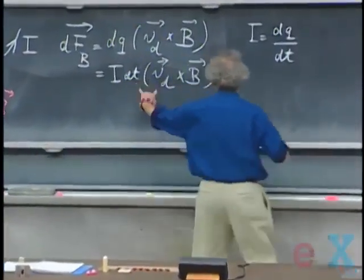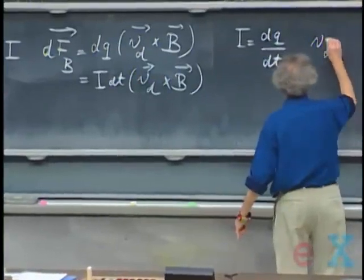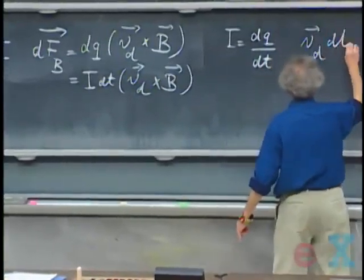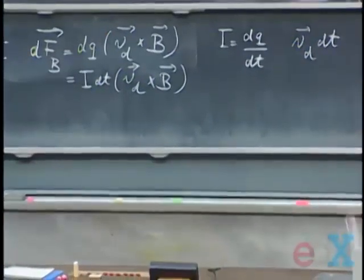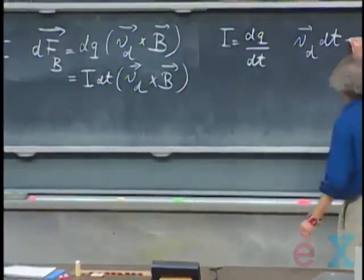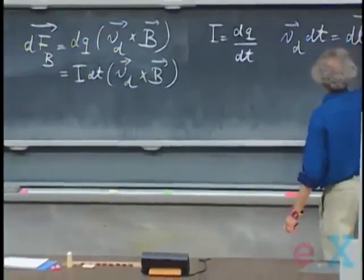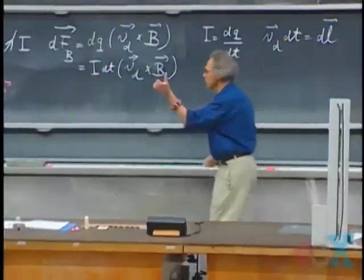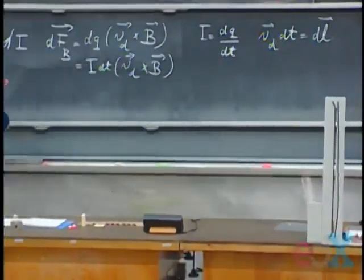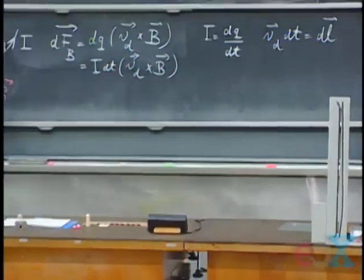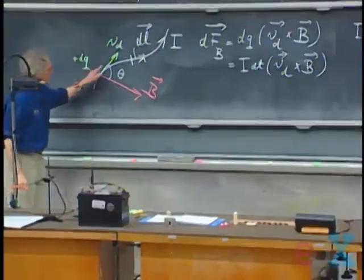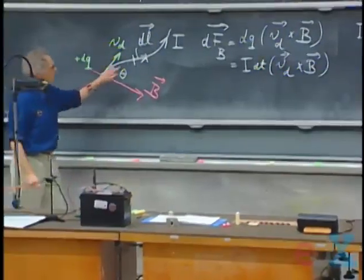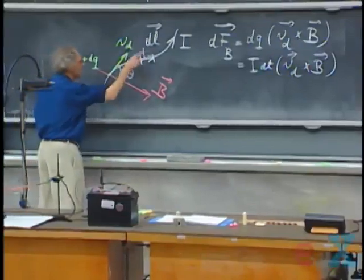But I remember 801, that VD times DT, that is a speed times a time, is a distance. And I call that distance DL. It's a distance along the wire. So this charge in time DT moves over that distance, that's a vector. 801.